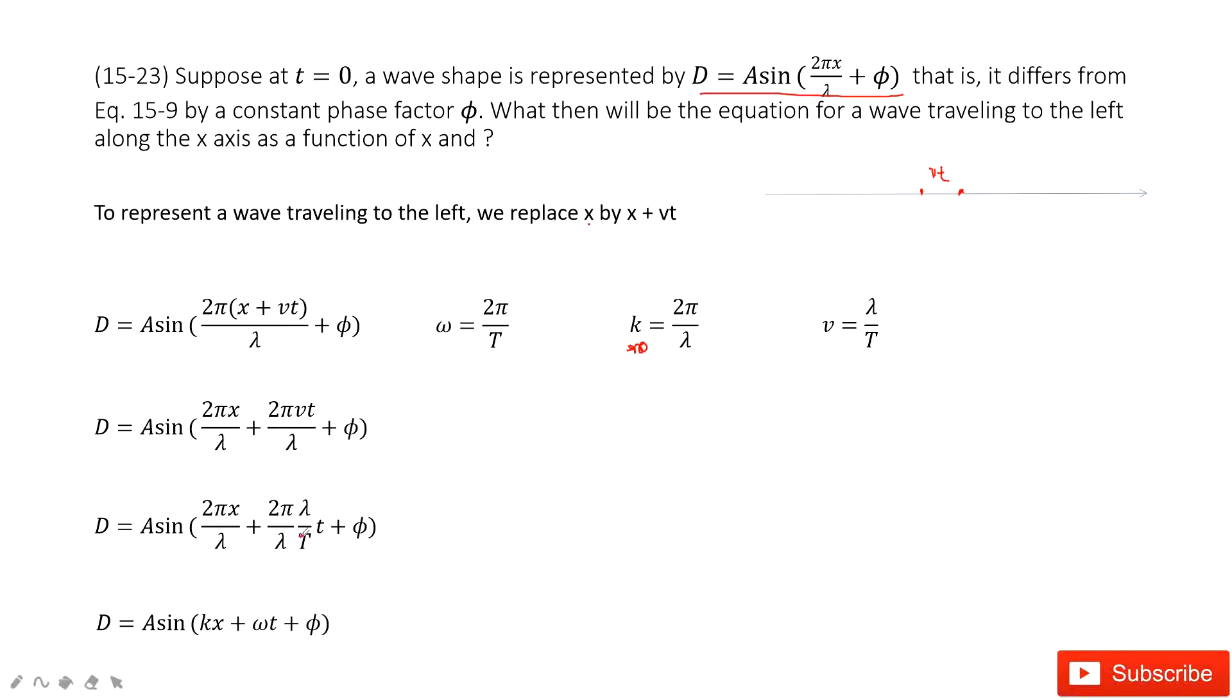And then 2 pi v divided by lambda times t. What is this one? This is called the angular velocity.